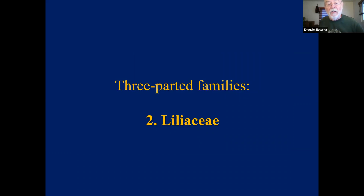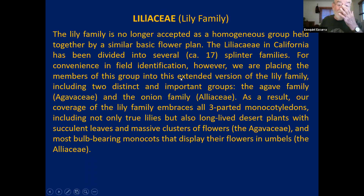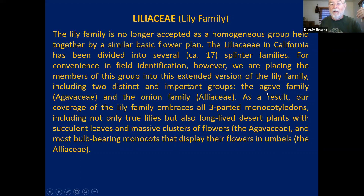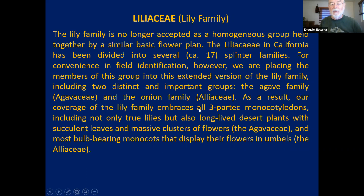Now let me go to the three-parted families in the monocots, which is really more typical — the Liliaceae. The lily family is no longer accepted as a homogeneous group and has been divided by taxonomists into a number of families. For example, the agave family has been separated into the family Agavaceae, including the Joshua tree and the Yuccas. The onion, garlic, and all the plants in that group have been separated into the onion family Alliaceae. When we talk about the Liliaceae in this class, we're talking about the Liliaceae in the broadest sense — a group of families that share many similar traits.